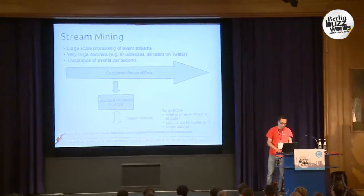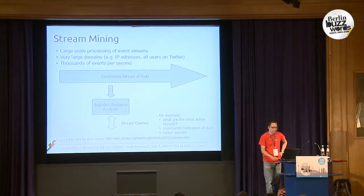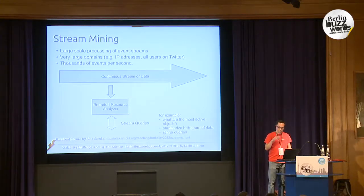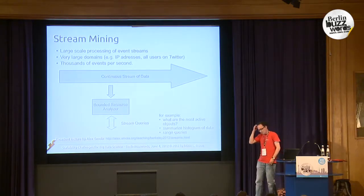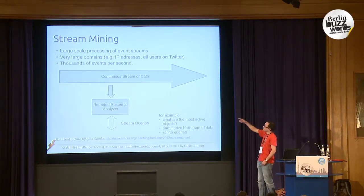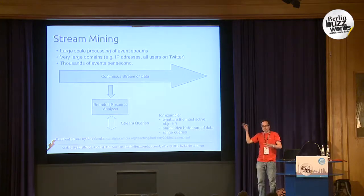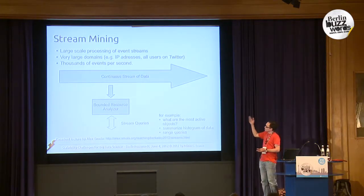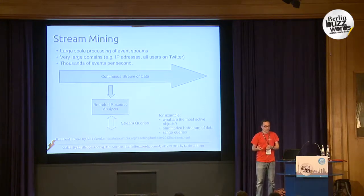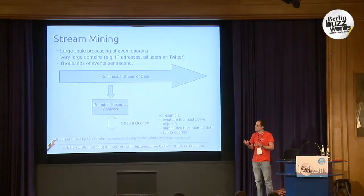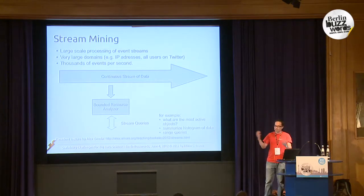There are other things I find very interesting that are not so well known in the scalability community: stream mining. Stream mining comes from data mining, and the basic idea is that the framework is already built for real-time processing. You have a big stream of data — for example, IP addresses, user activities, or all tweets from Twitter — thousands of events per second, and the domain of events might be very large: millions or hundreds of millions of different event types.